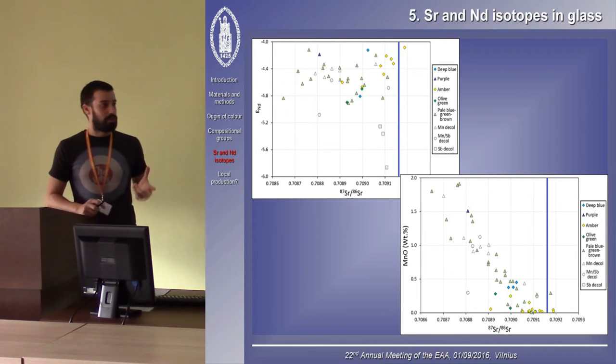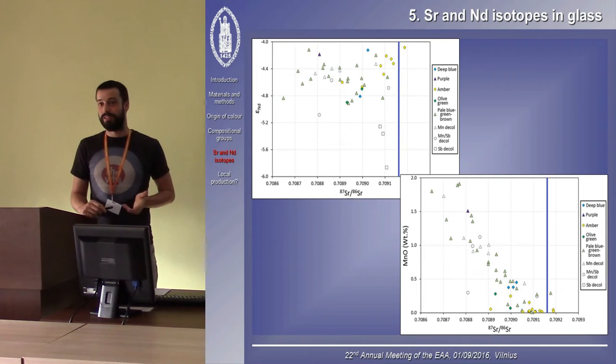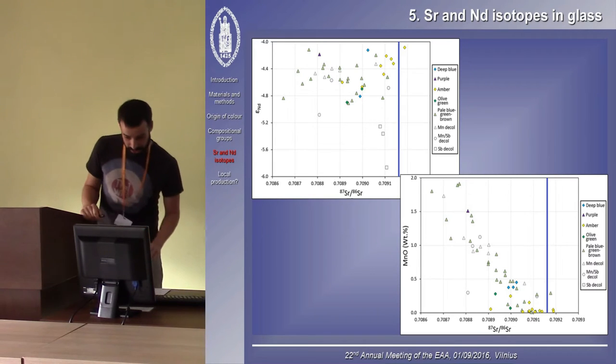So, when using isotopes in glass, or I guess in all materials and artifacts, we also have to be aware with what raw material the elements in question are coming in. It's very often the case that we have a mixture of different signatures.